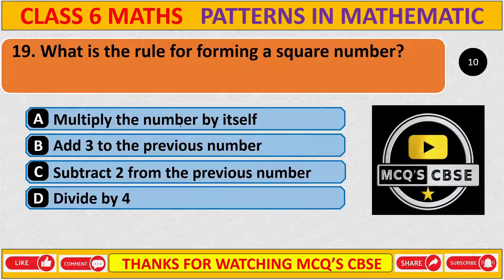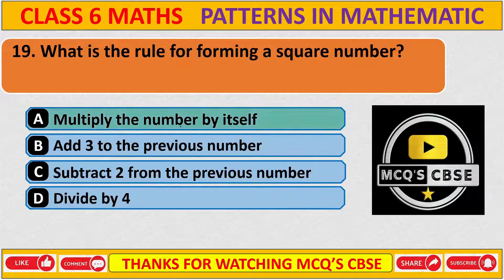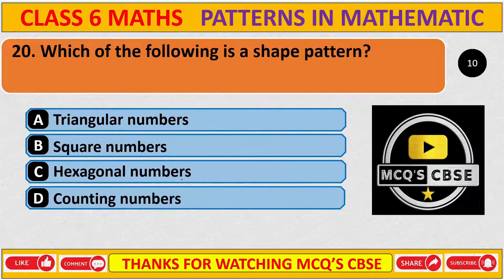What is the rule for forming a square number? The correct answer is A: multiply the number by itself.